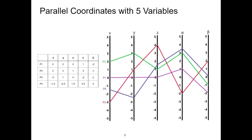Parallel coordinates with five variables. This is the table from slide 3 that we already saw before. We could not plot this data on the Cartesian plot, but we can plot it in a parallel coordinates plot. Each point in this table has five variables. Each point variable is represented by an axis, and each point is described by an edge on the parallel coordinates. In this example, we have five axes and four polylines. The edge crosses each axis to show the corresponding value of the point on a particular axis.